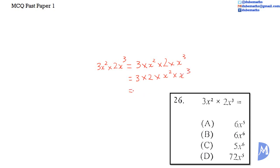3 multiplied by 2 multiplied by x squared multiplied by x cubed. 3 multiplied by 2 is equal to 6. And x squared multiplied by x cubed is equal to x to the 5th power. Remember the laws of indices. When we multiply quantities with the same base, we add the powers.